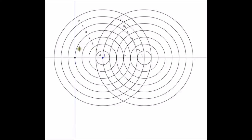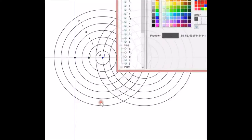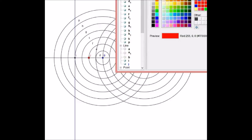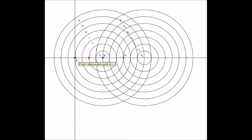What if we look at this horizontal line? Let's say the small circle has a radius of 1, so the difference between radii of subsequent circles is 1. This red point here is two units away from the focus and two units away from the directrix — so indeed, it should lie on the parabola.